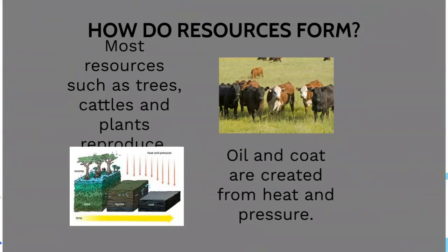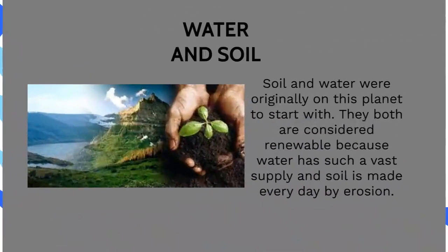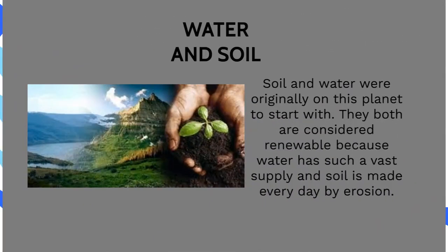How do resources come from? Most resources such as trees, cattle and plants are produced again and again, while other materials are created from heat and pressure. Water and soil were originally on this planet to start with. They are both considered renewable because water has such a vast supply and soil is made every day by erosion.